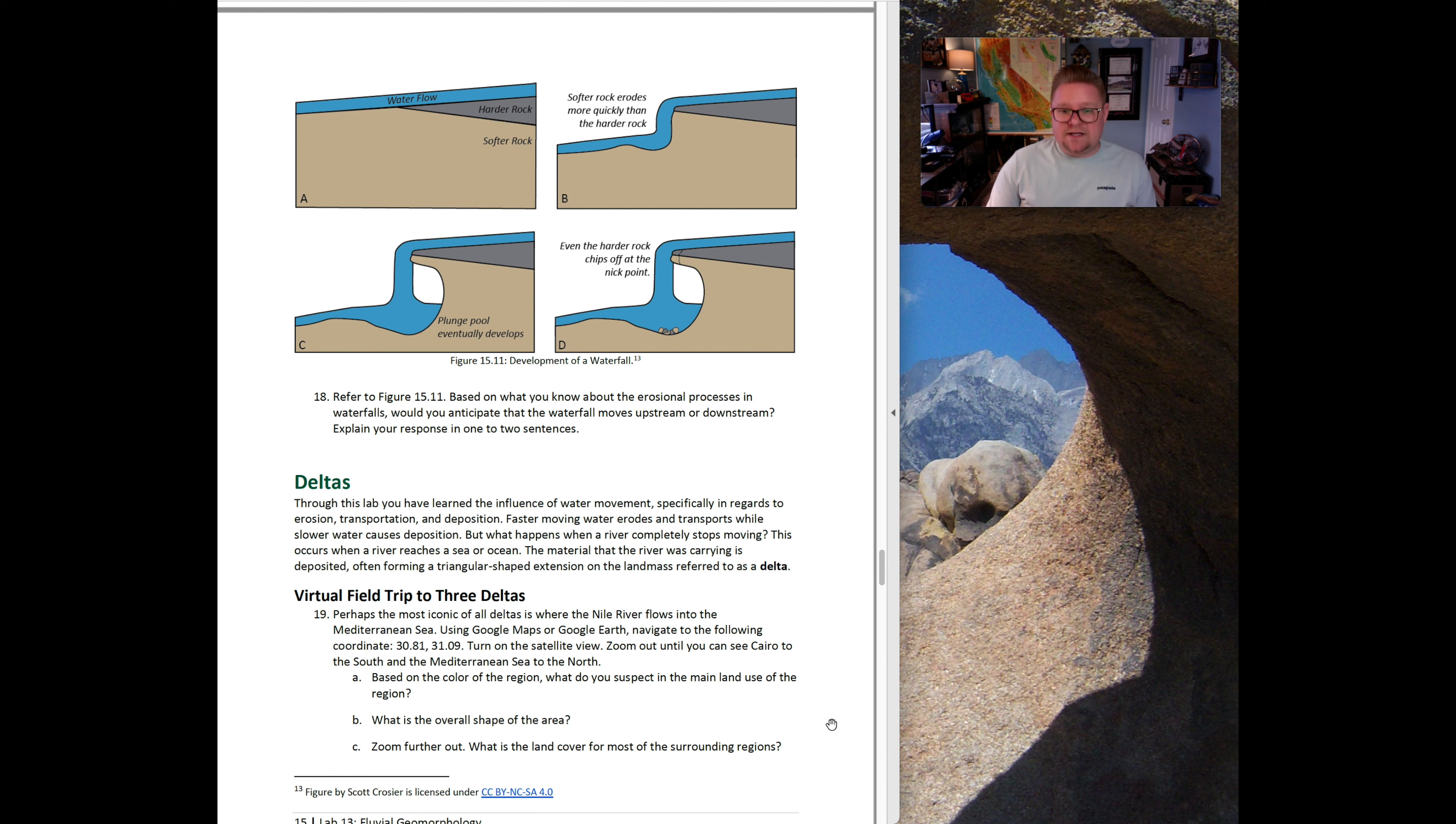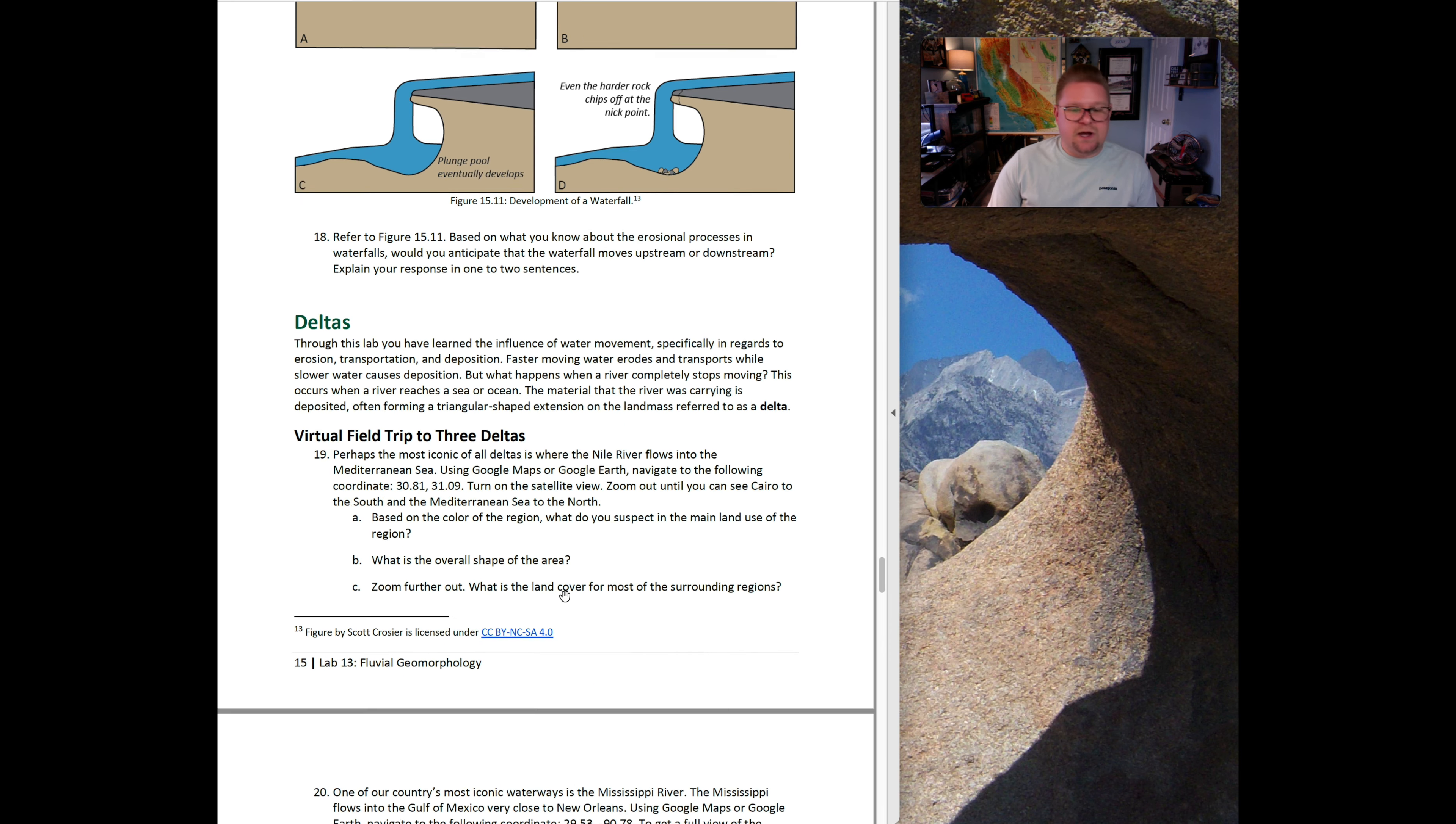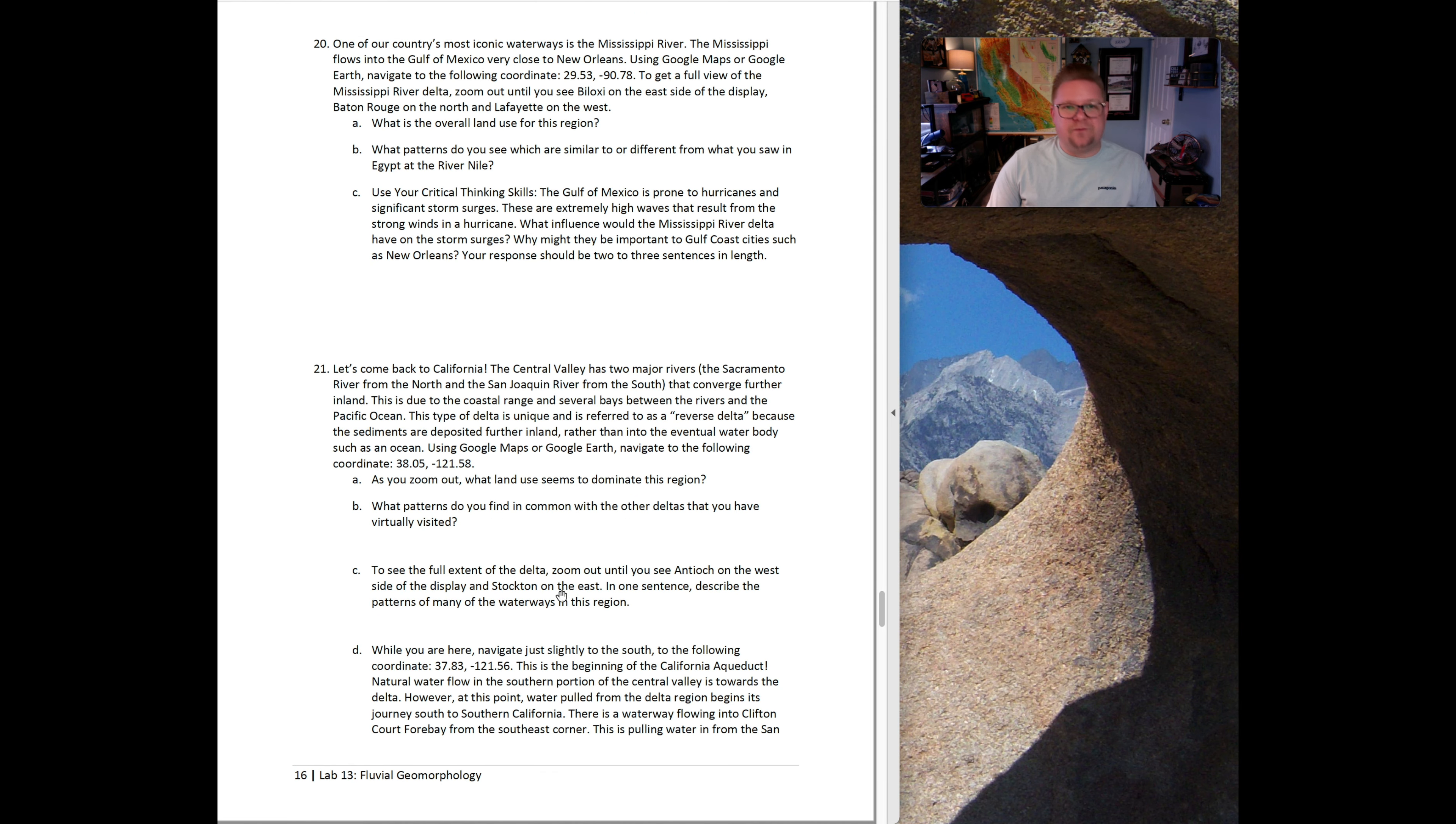One more virtual field trip. Perhaps the most iconic of all deltas is where the Nile River flows into the Mediterranean Sea. Using Google Earth or Google Maps, navigate to the following coordinate. Turn on the satellite view. Zoom out so you can see all of Cairo to the south and the Mediterranean Sea to the north. Based on the color of the region, what do you suspect in the mainland use of the region? What is the overall shape of that area? Zoom out further. What is the land coverage for most of the surrounding region? You're going to continue to answer these questions based on what you observe.